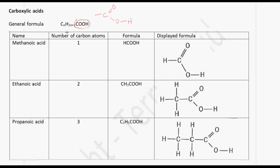If you look at the general formula, you will realize that you have a carbon in the chain and also a carbon present in the functional group as well. Therefore, the first member of this group has one carbon atom and the formula is HCOOH, which is represented by this formula here.